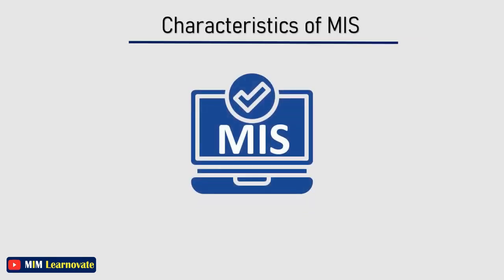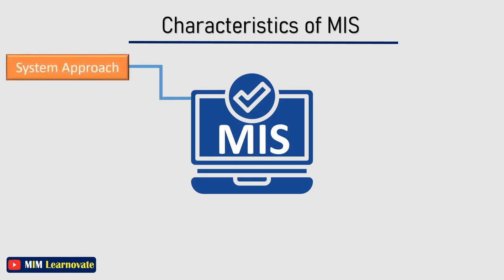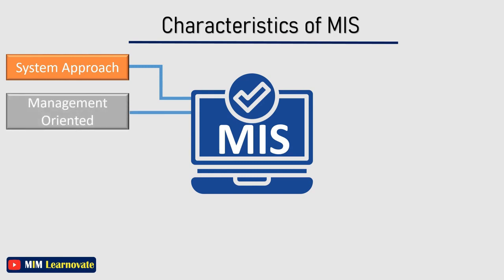MIS plays a very important role in every aspect of an organization. The characteristics of MIS are generic in nature. The management information system follows a systems approach, which implies a holistic approach to the study of the system and its performance. The management-oriented characteristic implies that a top-down approach needs to be followed for designing MIS. MIS should be developed on the exception-based reporting principle, meaning abnormal situations where values vary beyond tolerance limits should trigger exception reporting to the decision-maker.